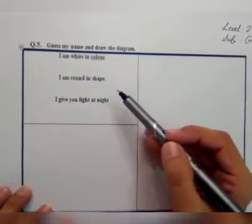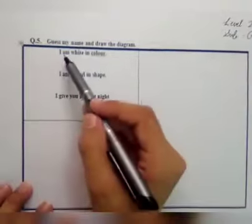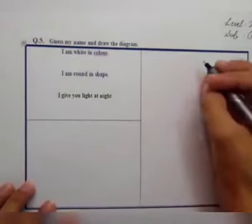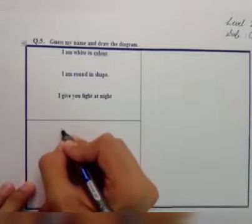First, I am white in color. So guess the name - which thing is white in color? So here I can write egg.